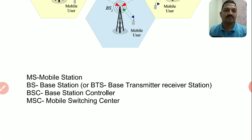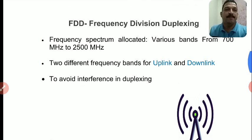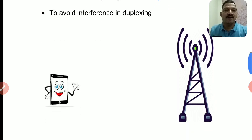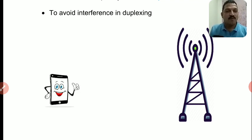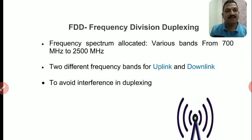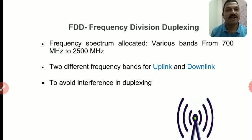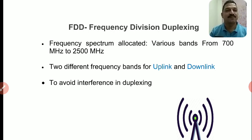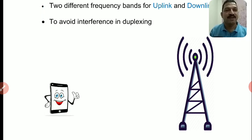FDD का concept समझने के लिए, जैसा कि हम जानते हैं कि हमारा mobile phone एक wireless communication system है और हमारा mobile phone एक nearby Base Station से wirelessly connected होता है। तो हमारे mobile phone और Base Station के बीच में हम air medium use करते हैं, तो हमें Government से permission लेनी होती है। Government हमें एक Frequency Spectrum allocate करता है for cellular communication।